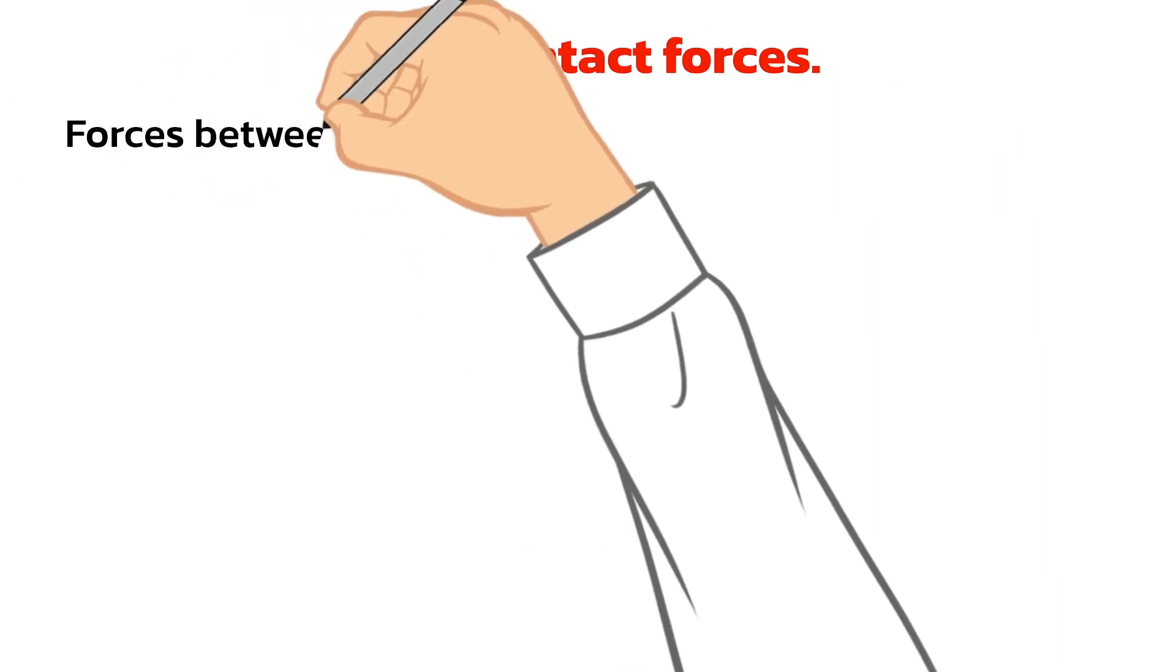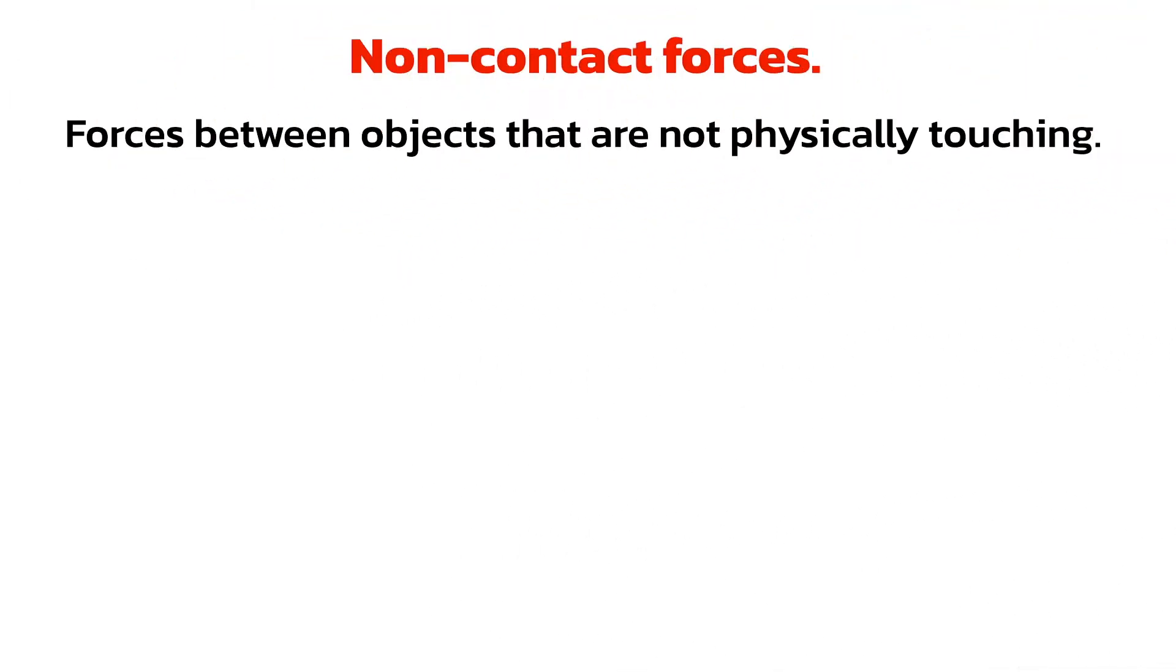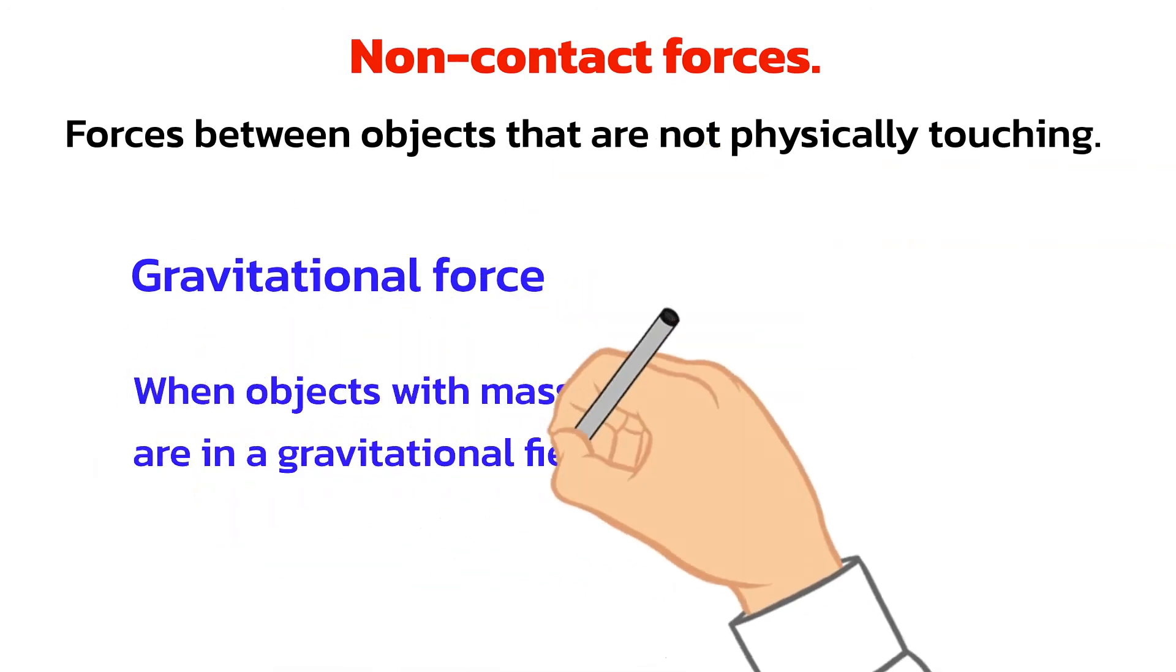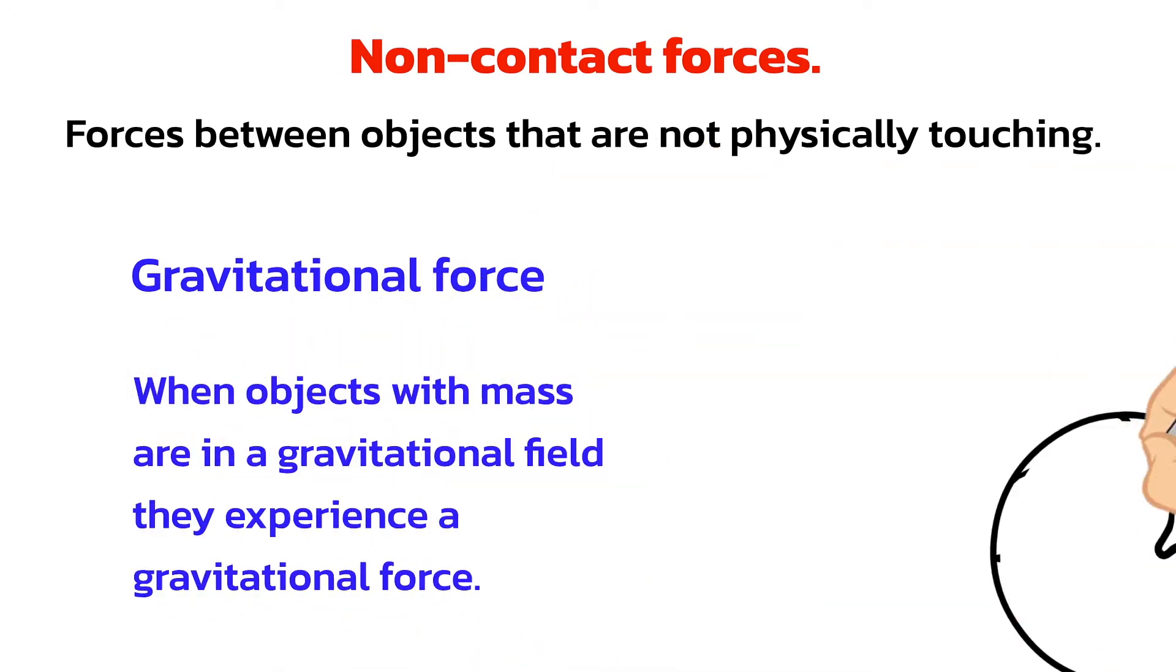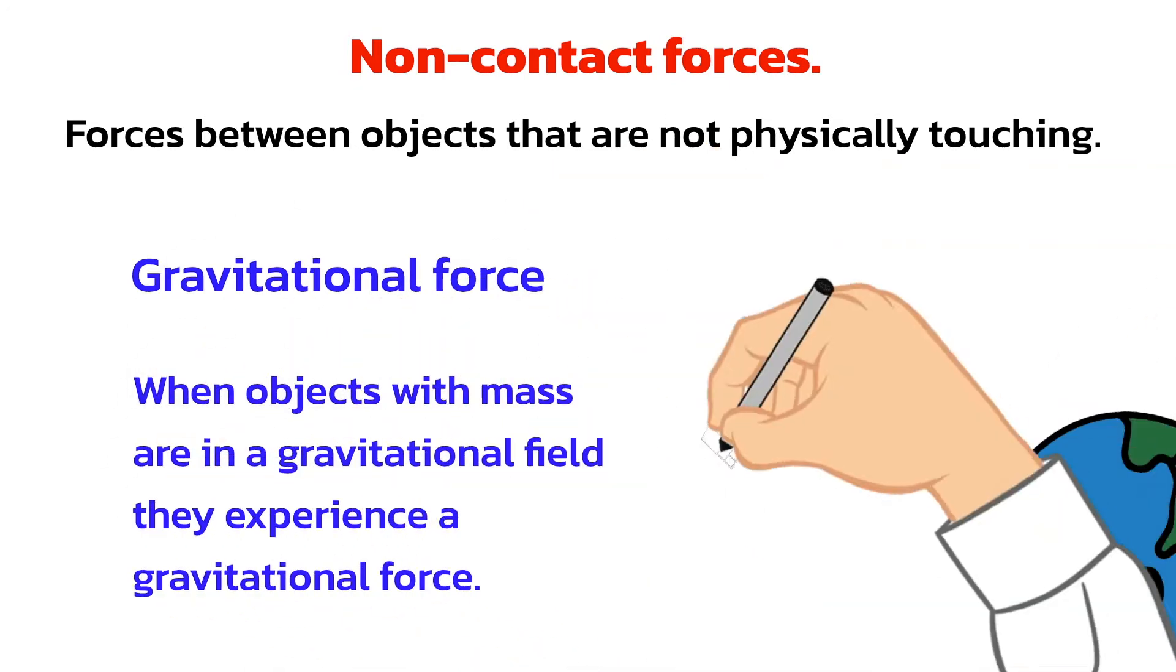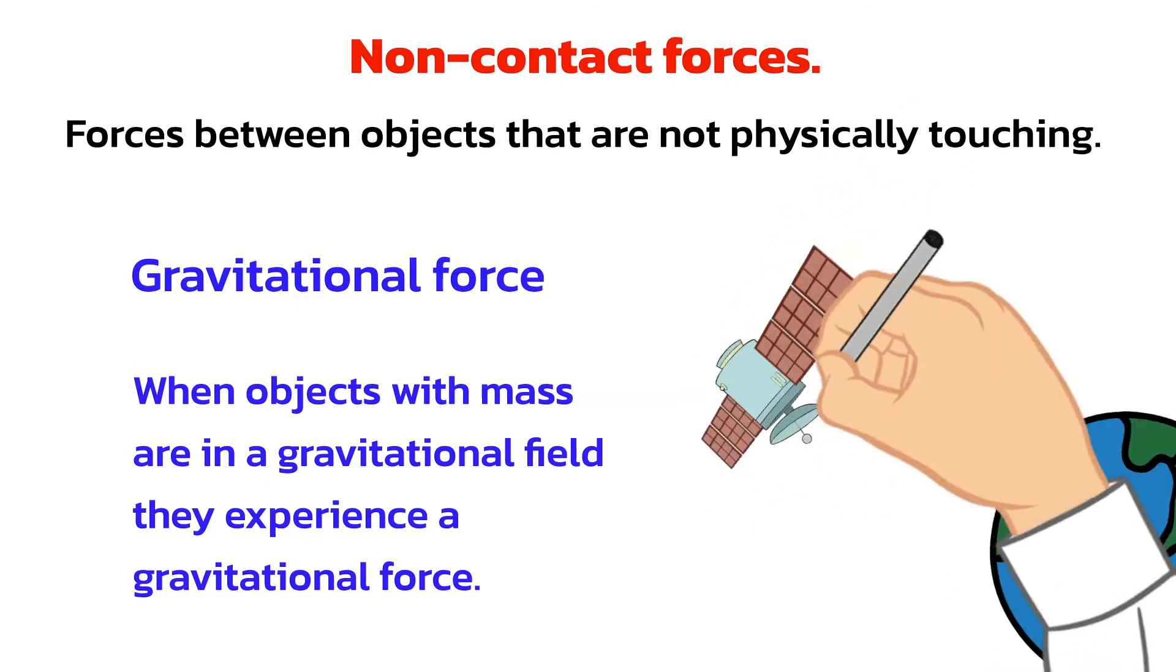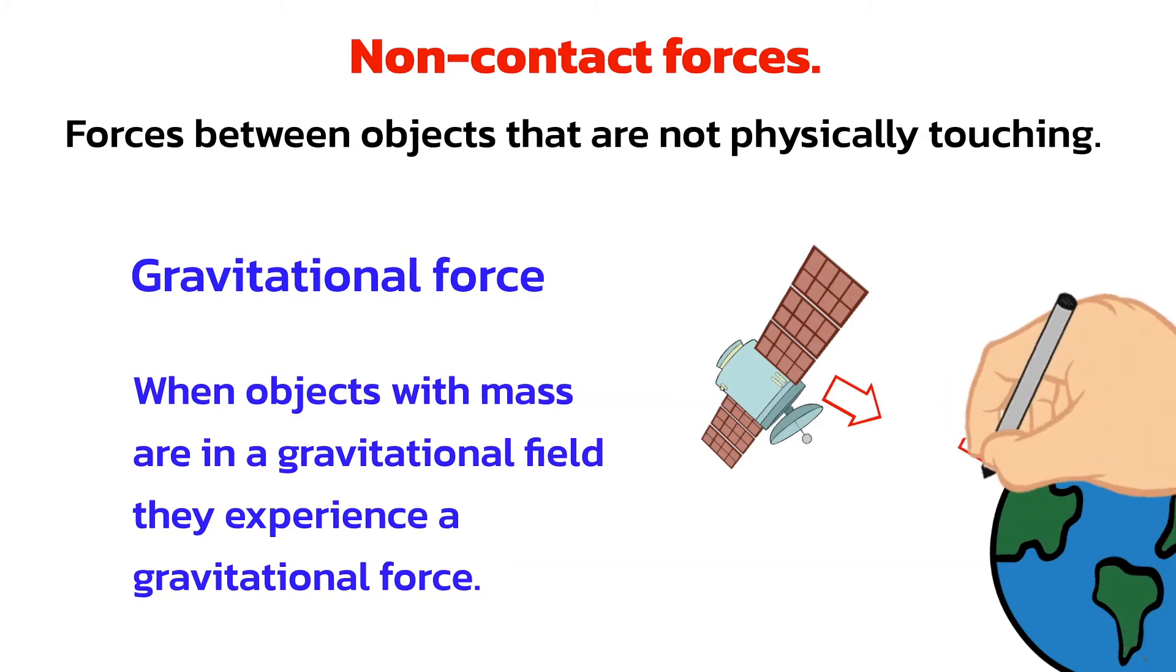We'll now look at the non-contact forces. These are forces acting between objects that are not physically touching. The first non-contact force we need to know about is gravity, or the gravitational force. When objects with mass are in a gravitational field, they experience a gravitational force. In this example, the satellite is held in orbit around Earth by the gravitational forces between the Earth and the satellite.